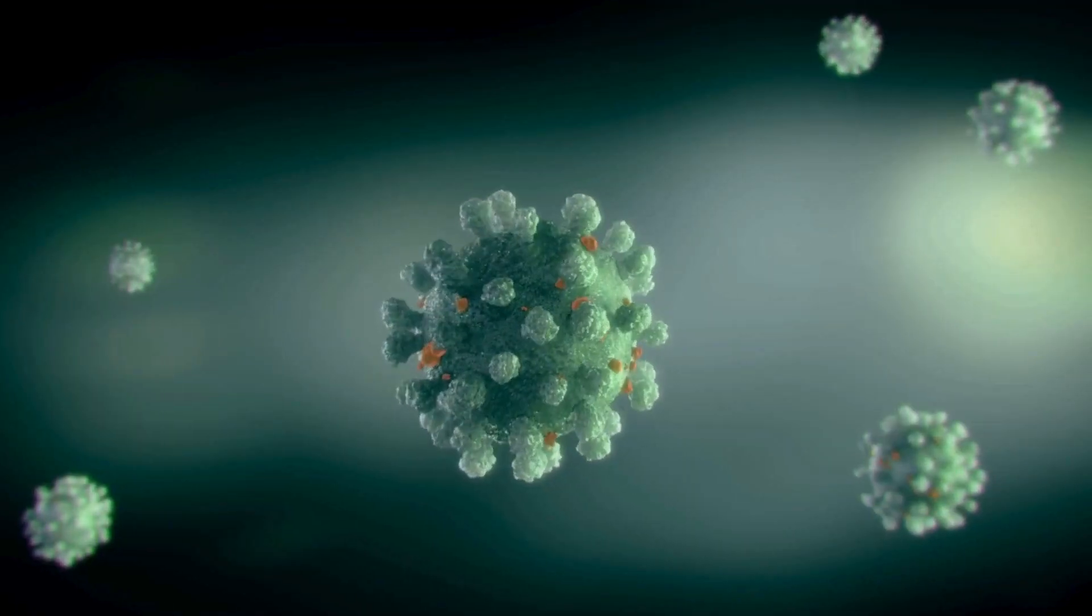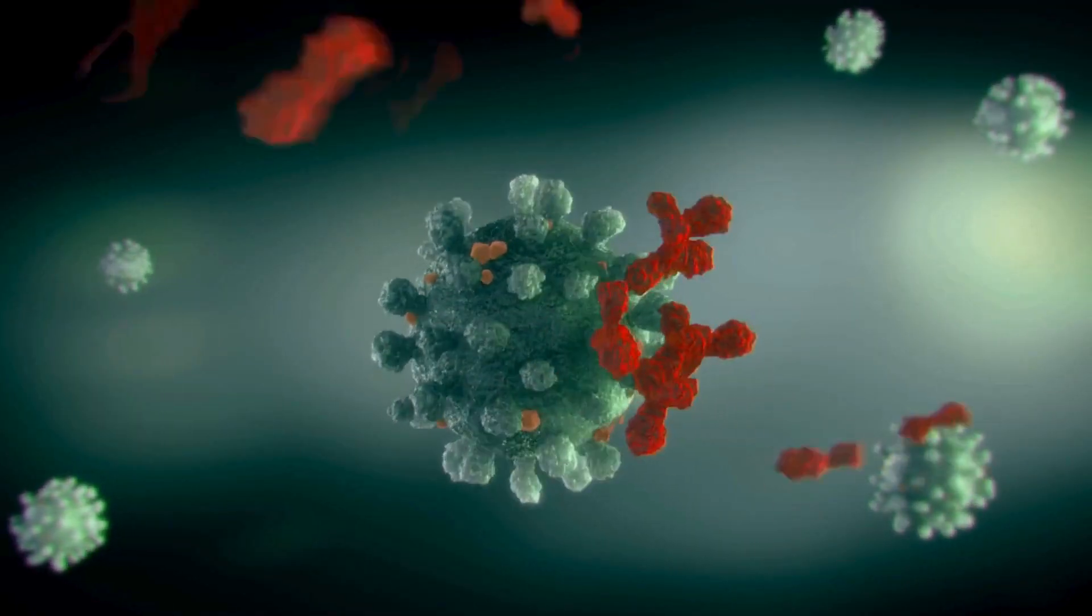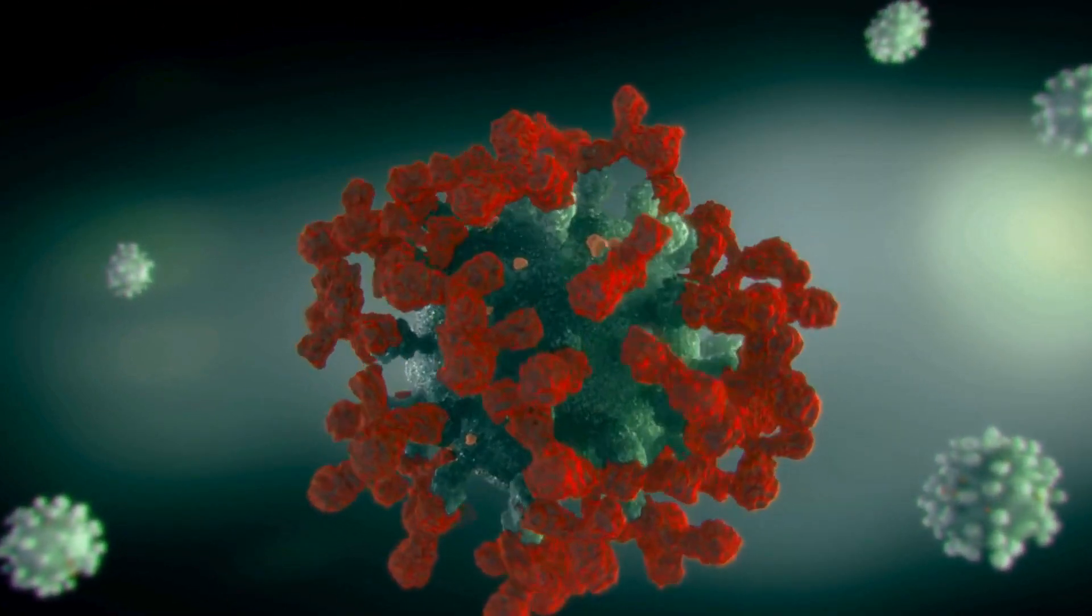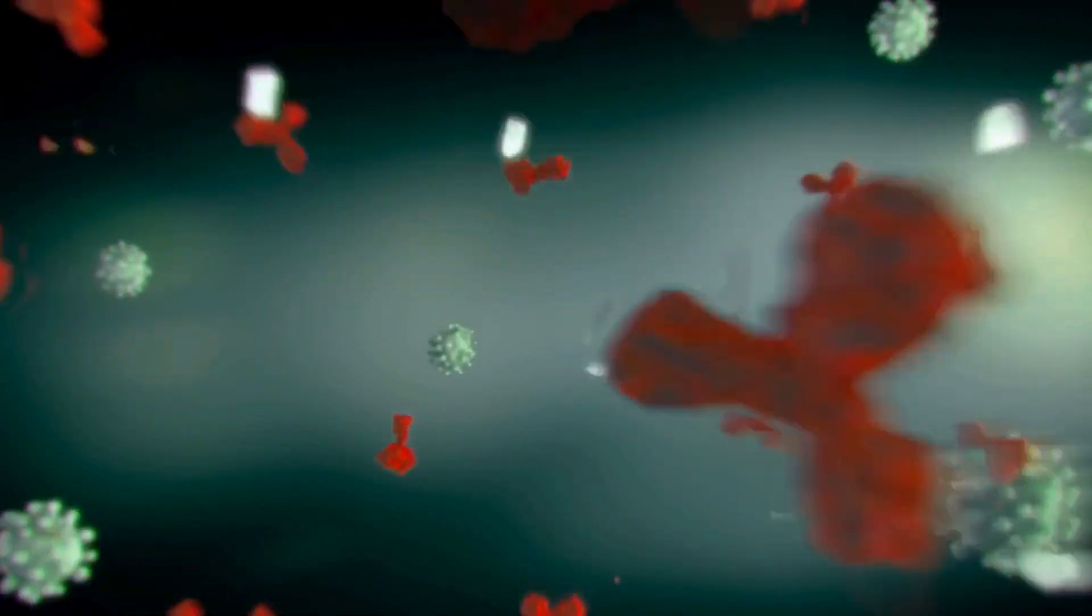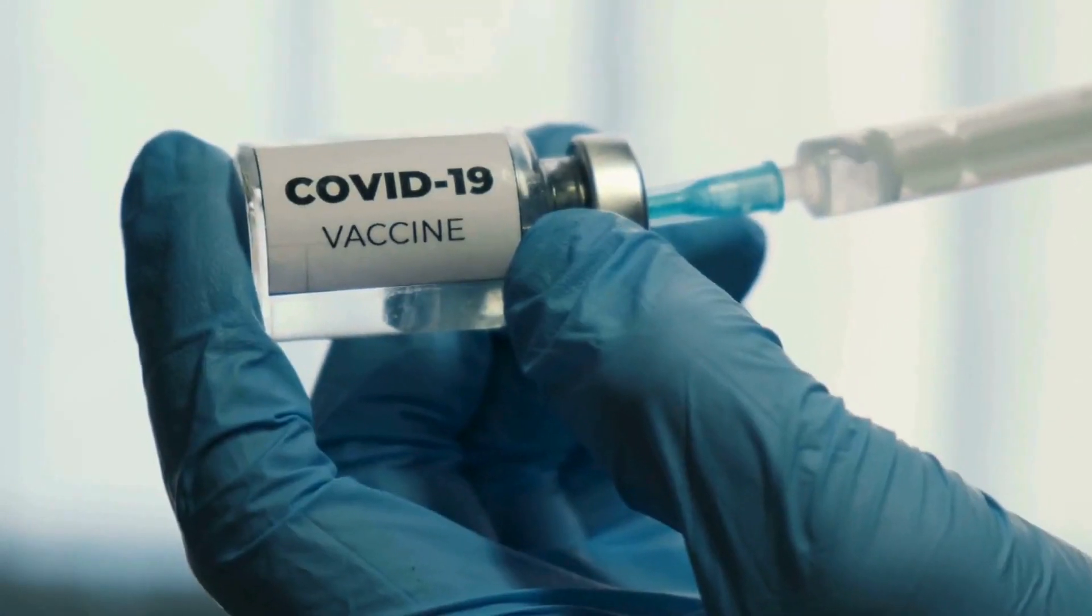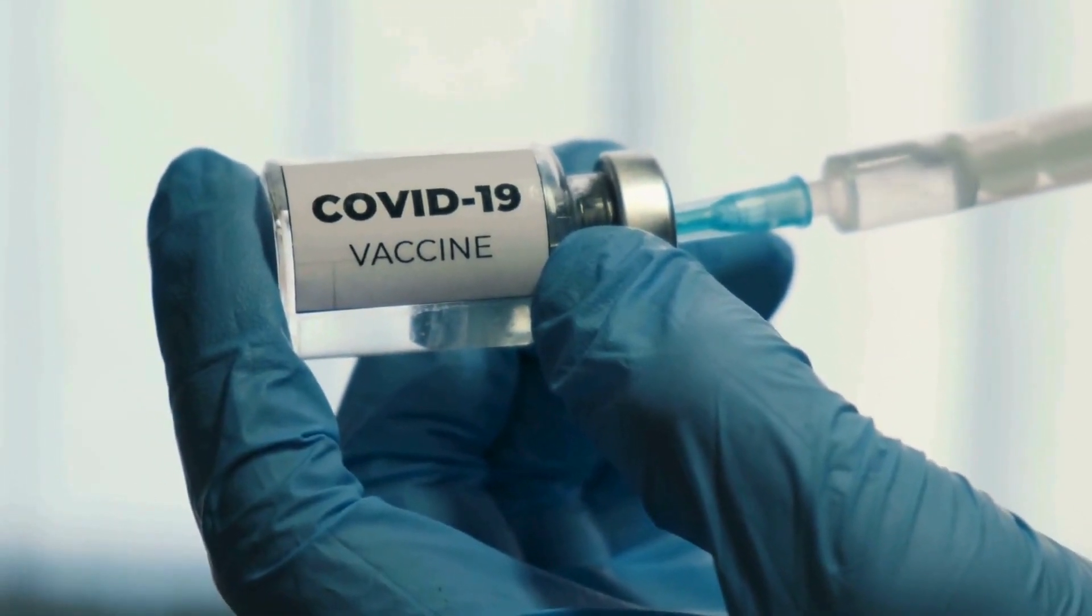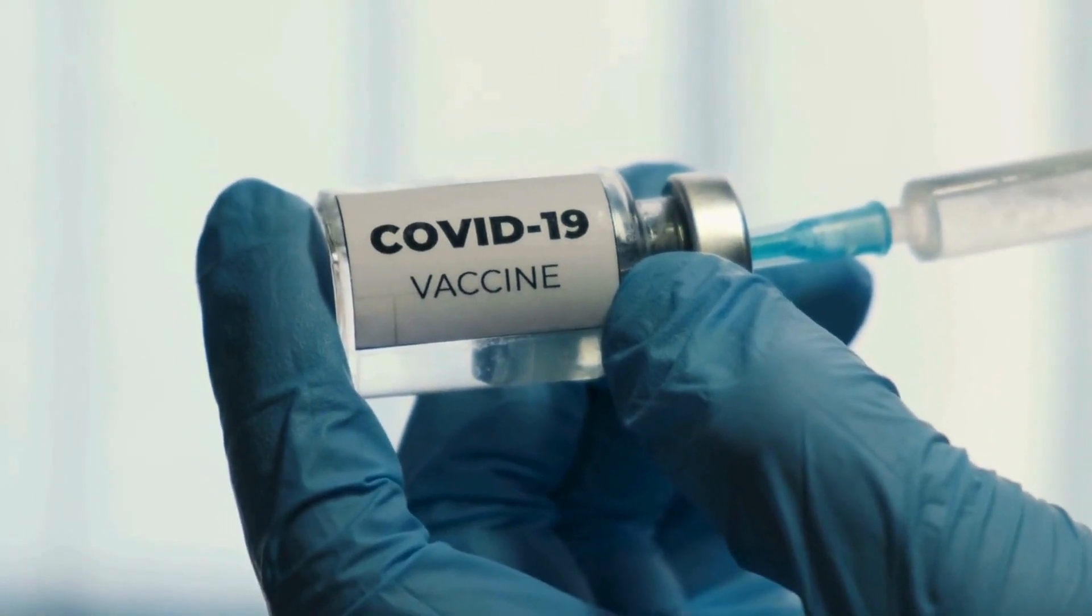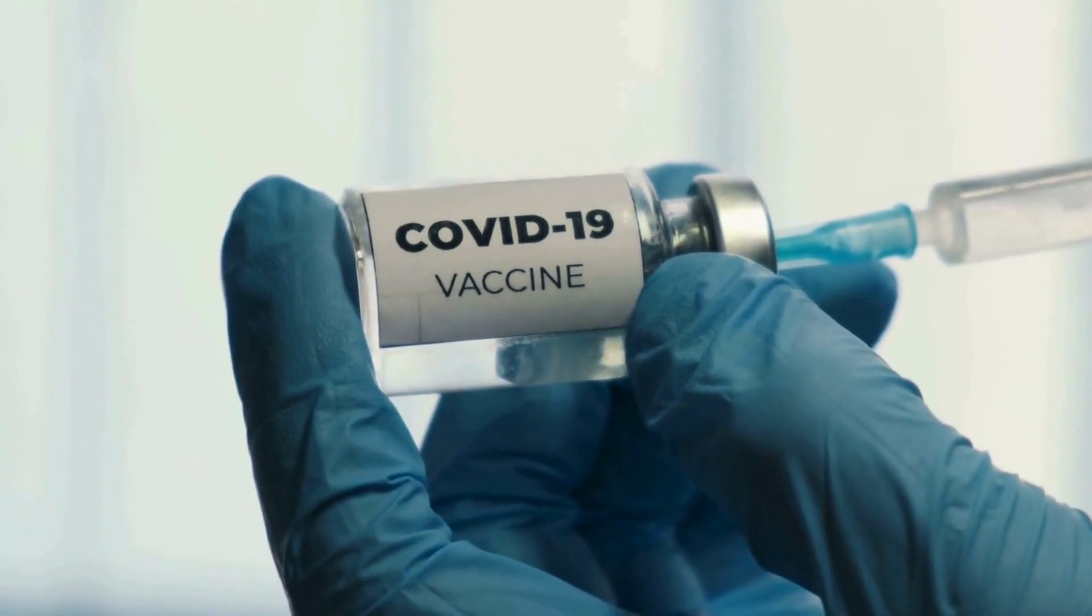Researchers attribute these failures to the production of non-neutralizing antibodies, which proved ineffective against the virus. Developing an effective HIV vaccine poses unique challenges, as the immune system does not naturally mount a strong defense against the virus. Unlike many vaccine-preventable infections such as COVID, a HIV vaccine must stimulate super-charged immune responses without a natural equivalent.